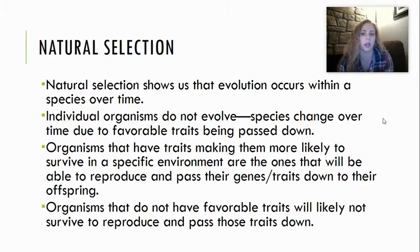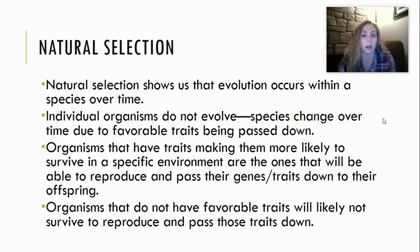Organisms that don't have favorable traits obviously are not going to survive. And if they don't survive, then they're not alive to reproduce, which means they don't pass those traits down. So that's how those traits eventually kind of disappear or at least become much less common over time within a species.